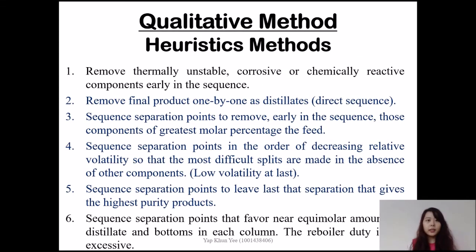This equation will be used to calculate the separation column. There are 2 separation columns, thus only 2 sequences. For the qualitative heuristic method, there are 6 rules. Heuristics 2, 3, 4, and 5 will be applied. For heuristic 2, remove by following the direct sequence. Components A, B, and C are removed at first stage, and D and E at second stage. Heuristic 3 removes the greater or smaller percentage early in the sequence.